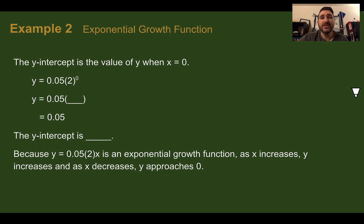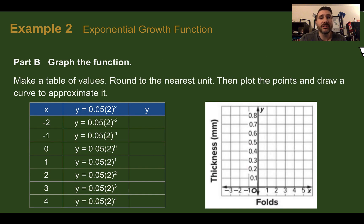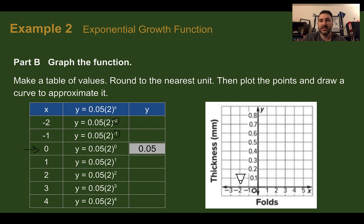To find key features: the y-intercept is the value of y when x is zero. Plugging in zero for the exponent — meaning we haven't folded it at all — two to the zero power is one, and one times 0.05 is 0.05, so that is your y-intercept. For end behavior, because it's a growth function: as x increases going to the right, y is also increasing, but as x decreases going to the left, the function approaches the imaginary asymptote at zero. To graph the function, we make a table of values: at x equals negative two we get 0.0125, at zero we get 0.05, at one we get 0.1, at two we get 0.2, at three we get 0.4, and at four we get 0.8 — each time doubling.